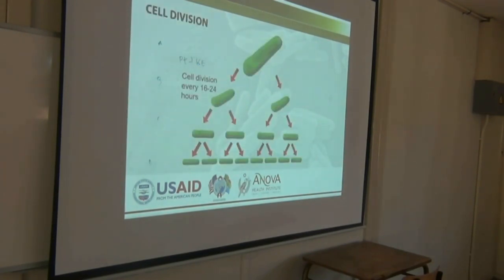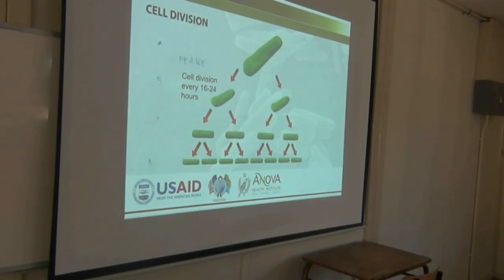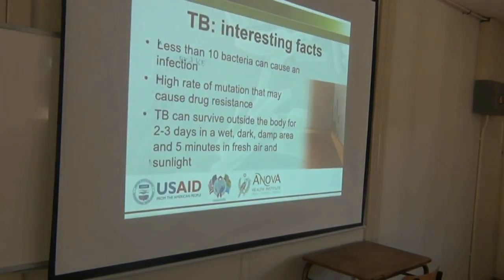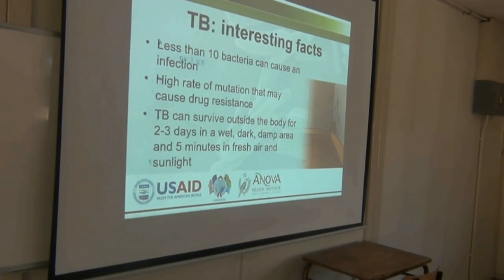TB divides relatively slowly compared to other bacteria — it doubles between 16 to 24 hours. Less than 10 bacteria can cause an infection, so you need a very low amount. There is a high rate of mutation that can cause drug resistance. TB can survive outside the body for two to three days in a wet, dark, damp environment.